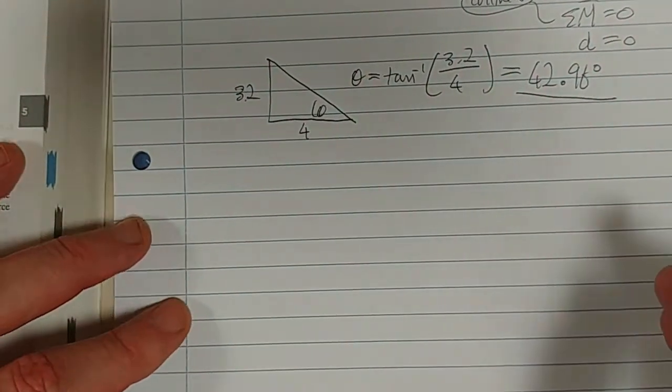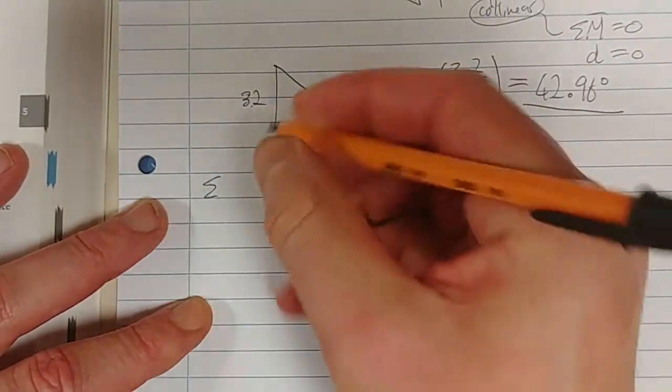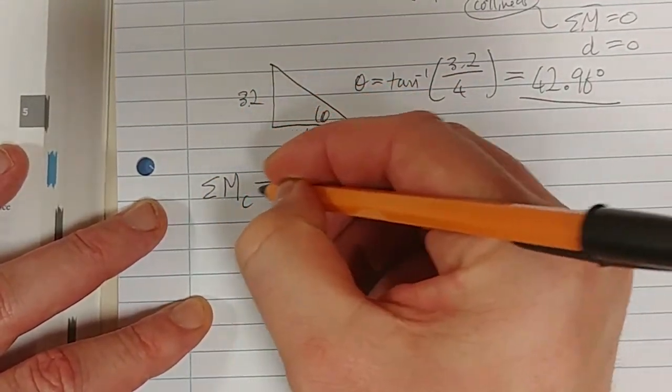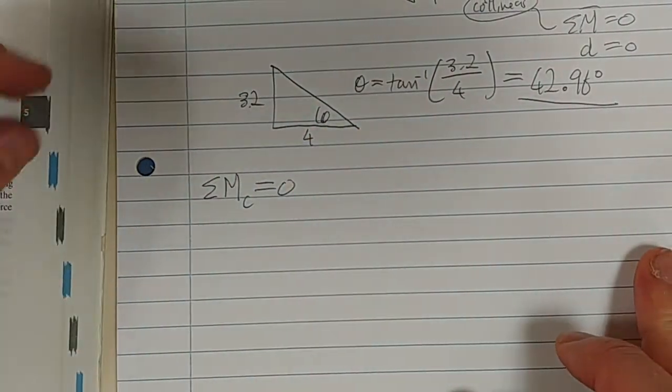42.96 degrees. So what's the next thing that we can do? So now we say, sum of the moments about C is equal to zero.